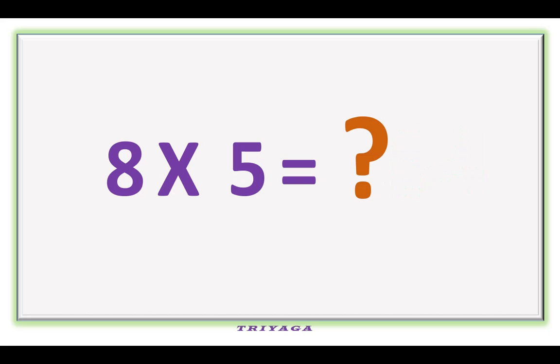8 times 9 is how much? It is 72. 8 times 9 is how much? It is 72.